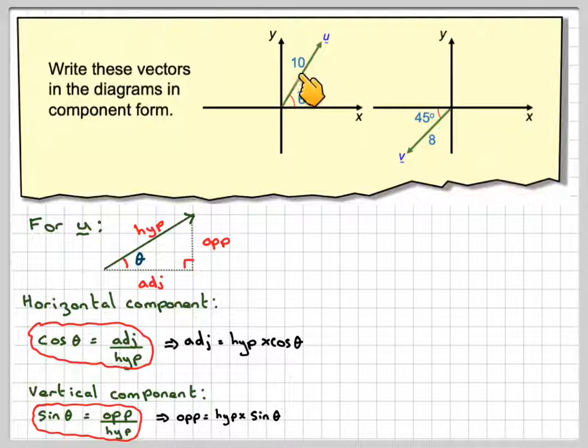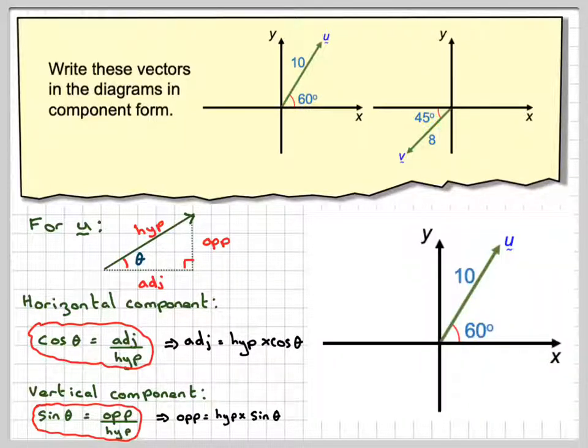So in order to find the component form, all you need to do is do 10 cos 60 and 10 sine 60 in the first example. So looking at the first example, we've got a magnitude of 10, and we've got the direction with the horizontal axis being 60. If we draw that line in, we get the right angled triangle. So the horizontal component is this one, and we get that by just doing 10 cos 60. And the vertical component is this one, we get that by doing 10 sine 60.